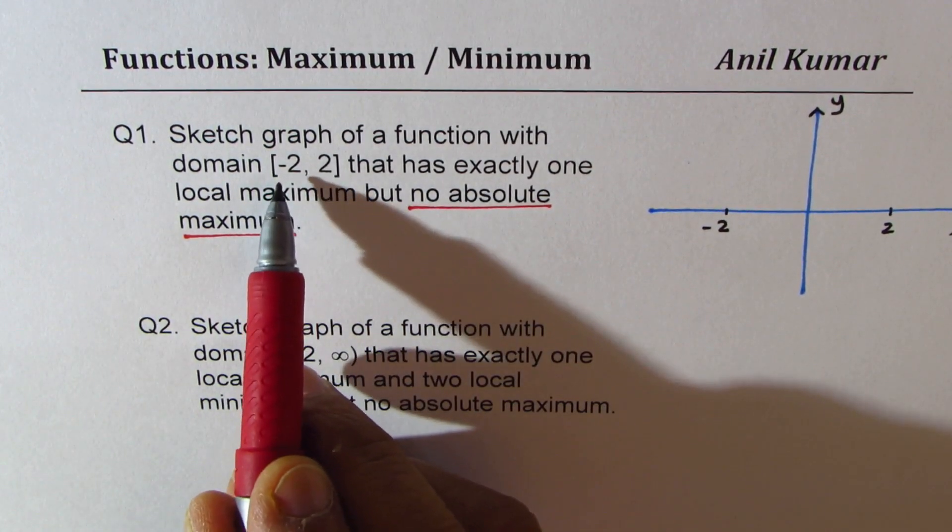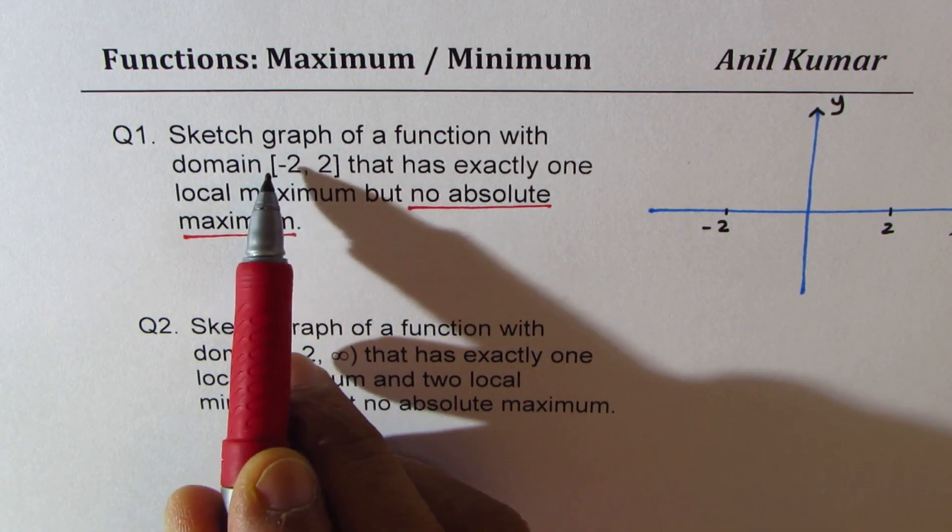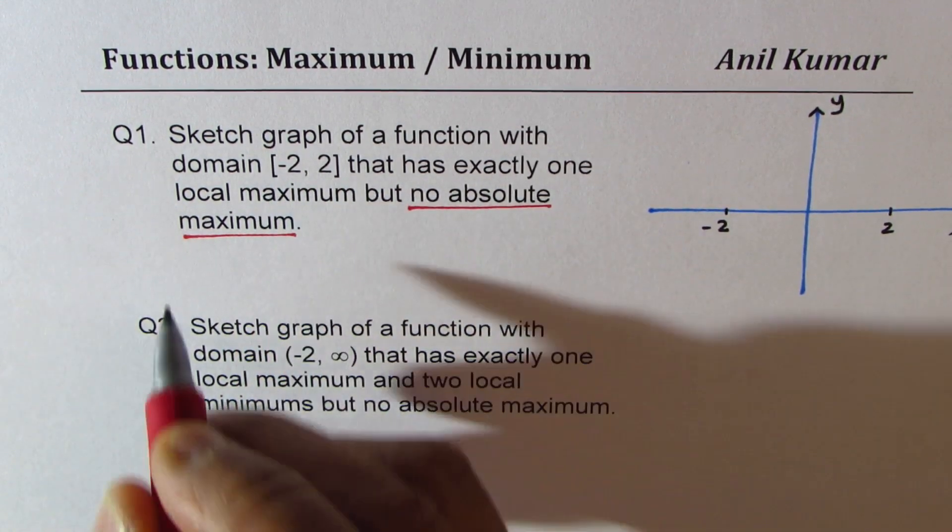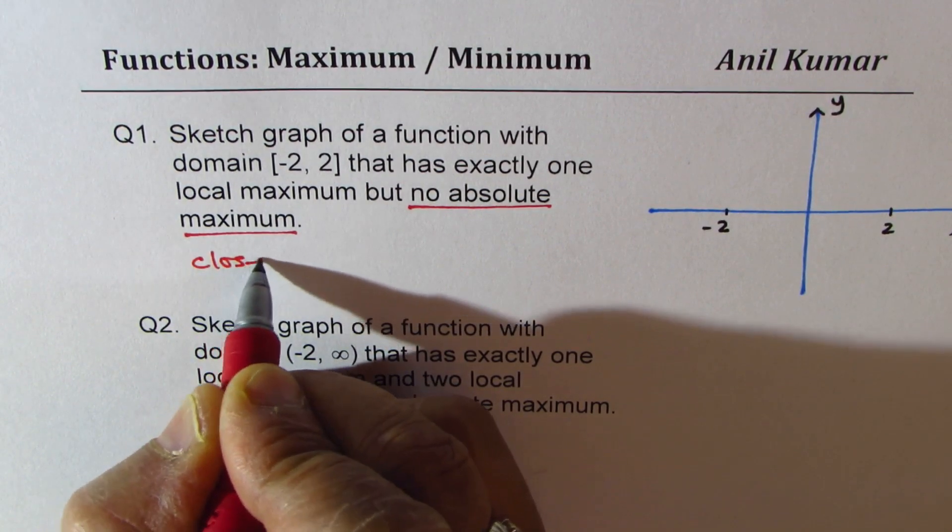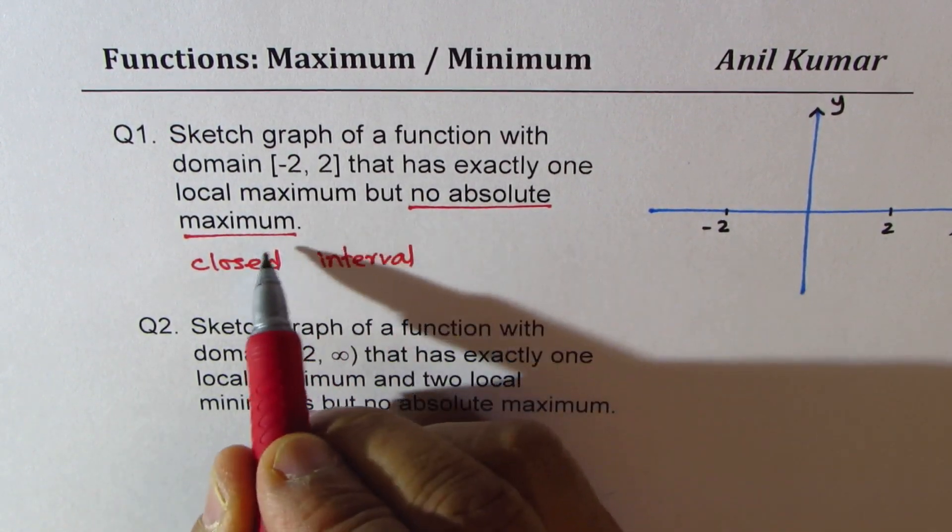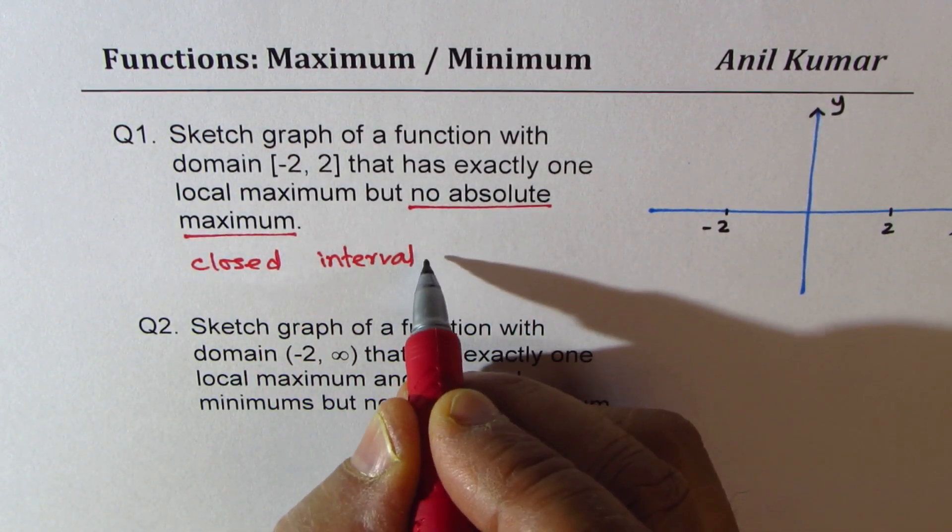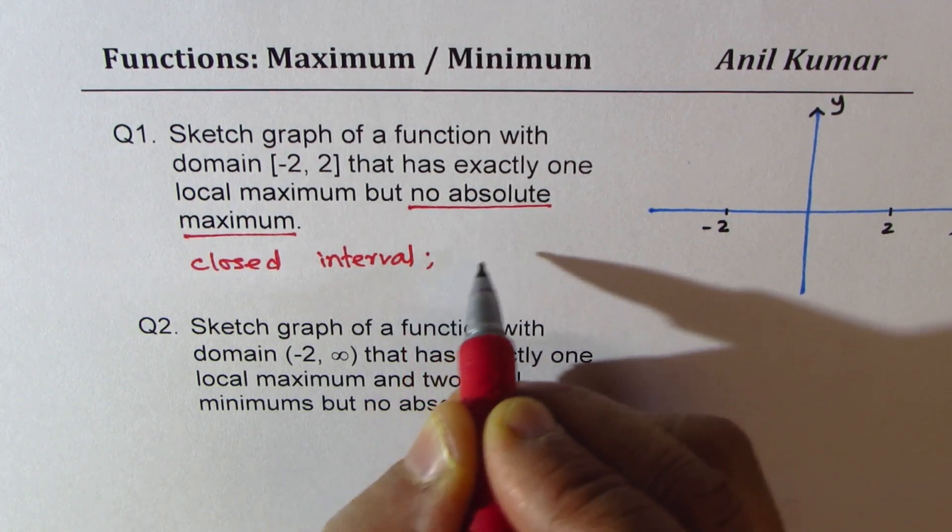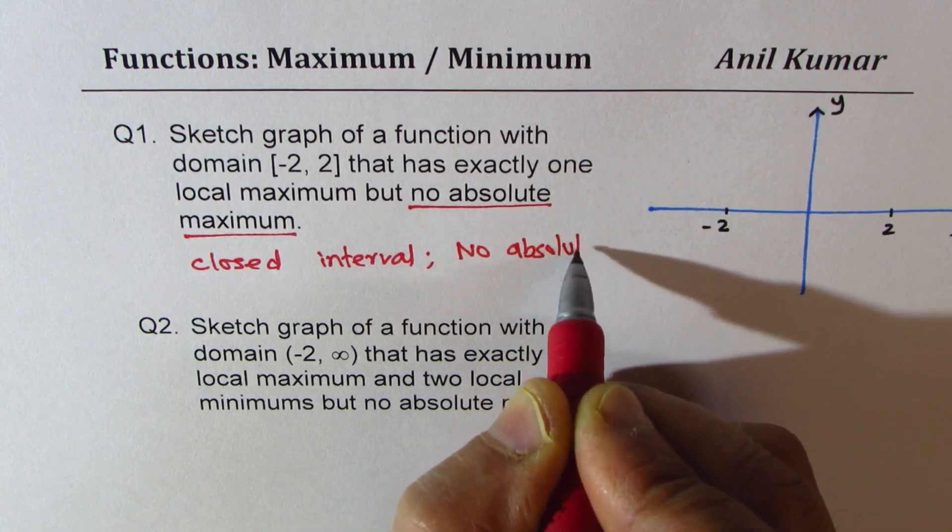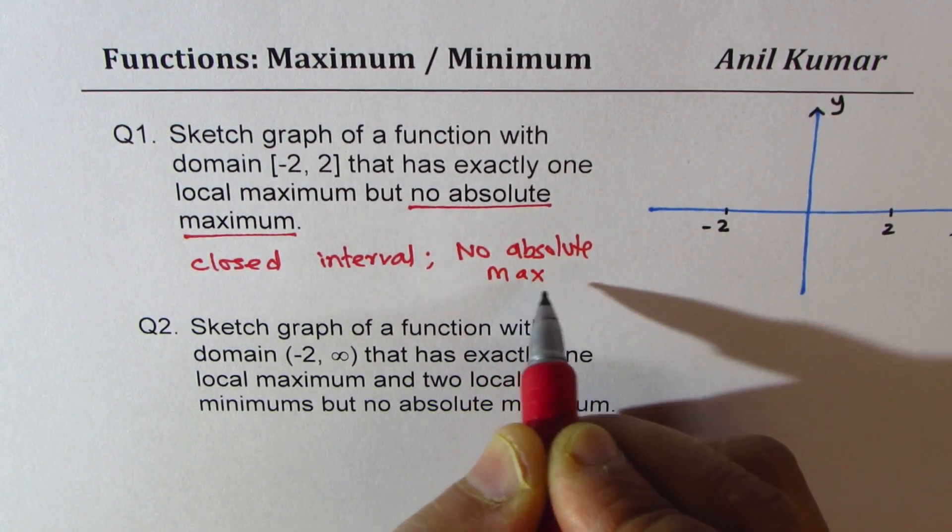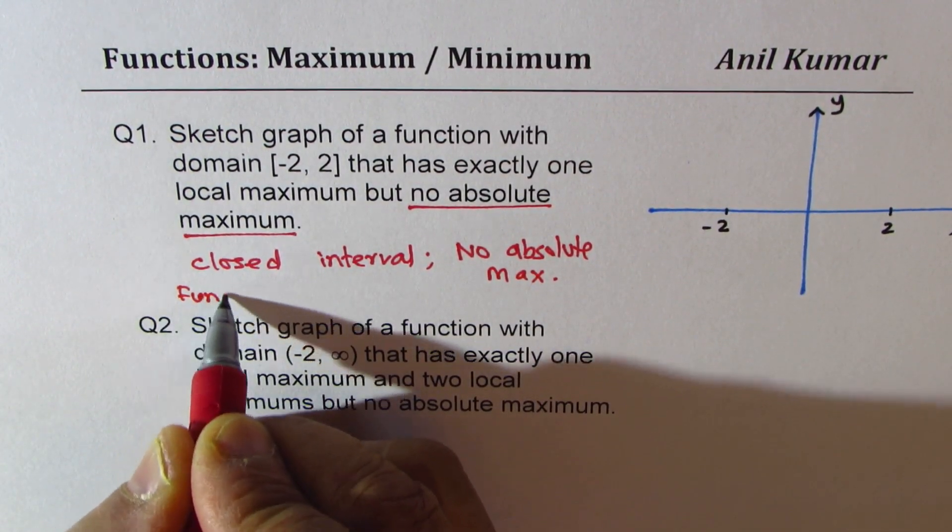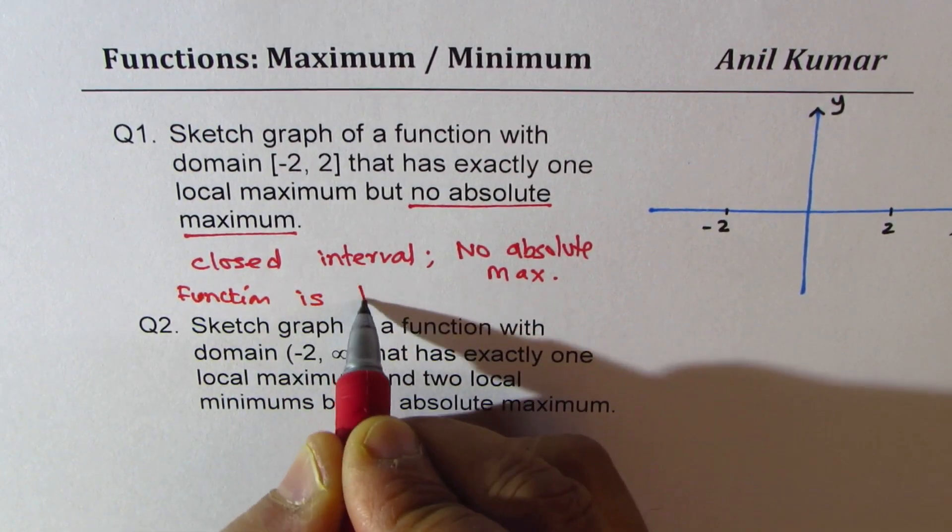Now it is important to understand that both bounds are included. So when you have a closed interval, then you should have absolute maximum also, but we are given a closed interval and we are also given no absolute maximum. It means what? It means that the function is discontinuous.